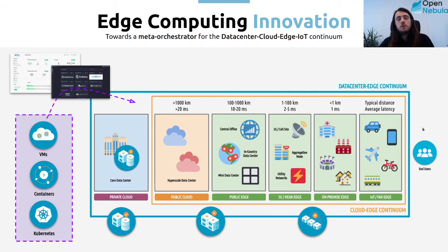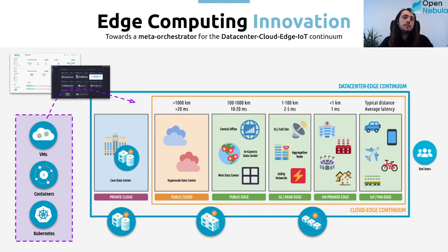The idea is that we want to have a meta-orchestrator to manage your data center and your IoT data center. You can deploy Kubernetes containers or virtual machines using OpenNebula in your private cloud — your on-premise data center — or you can deploy in public cloud providers in order to have resources at the edge, so the latency between your end users and your application is as low as possible. We developed this edge cluster architecture to support exactly this kind of workflow.